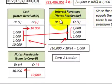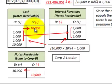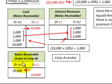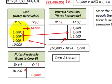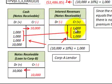Let's look at how we'd record this note from Corporation A, the lender's perspective. We credit (reduce) Cash by $10,000 and debit Notes Receivable for $10,000. Since there is no discount to amortize on the notes receivable, we record the cash interest payments of $1,000 per year — debiting Cash for each of those $1,000 payments at the 10% interest rate.